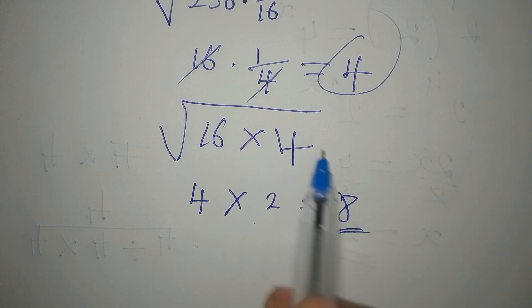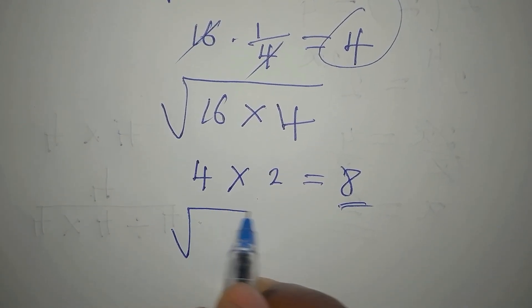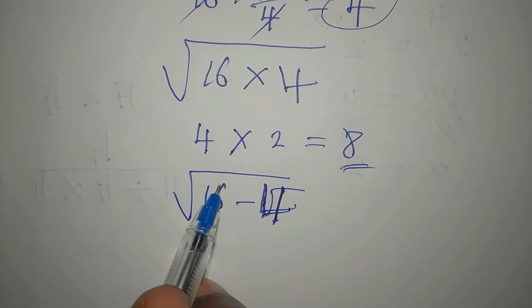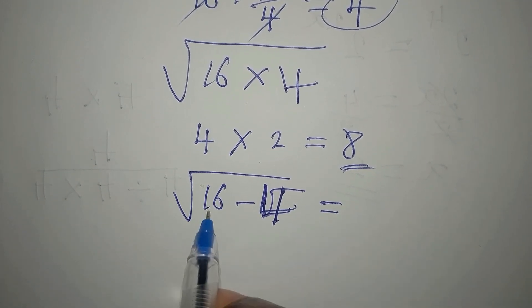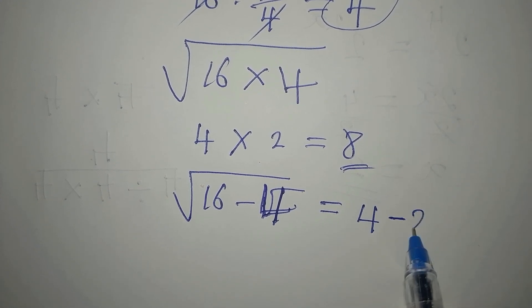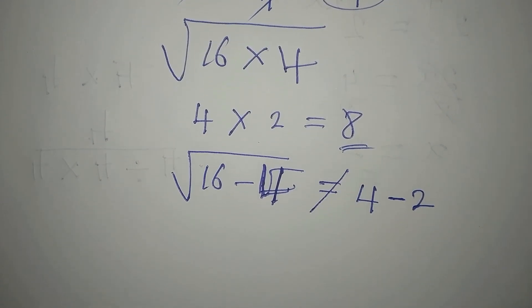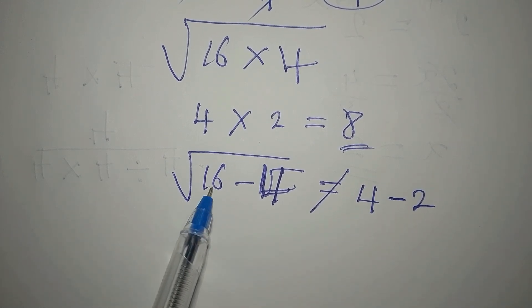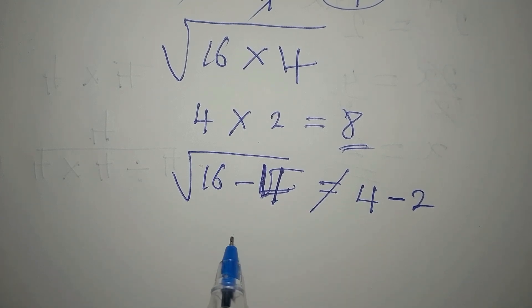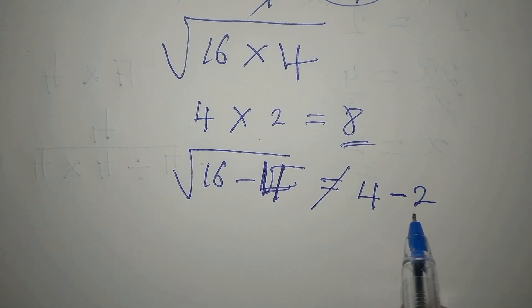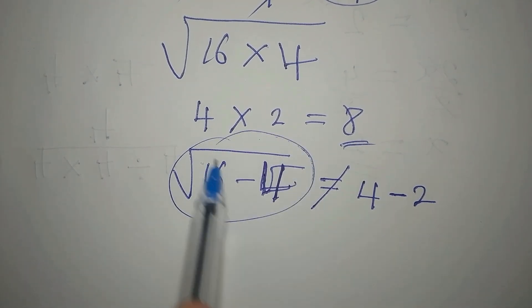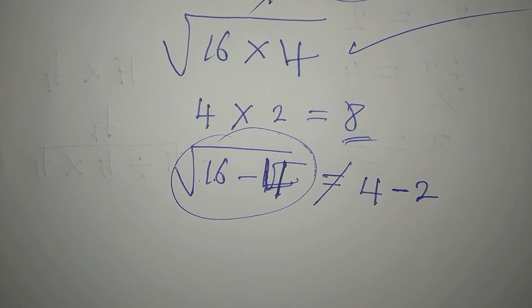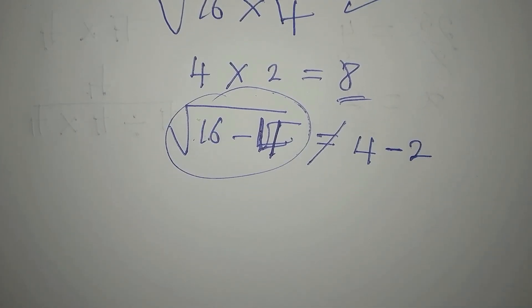However, if the operation is addition or subtraction, you cannot split the square root. For example, square root of 16 minus 4 is NOT equal to square root of 16 minus square root of 4, because square root of 16 minus square root of 4 gives 4 minus 2 equals 2, whereas square root of (16 minus 4) equals square root of 12, which is not 2. So if you want to handle terms separately, it must be multiplication; otherwise simplify inside first before taking the square root. Thank you for watching — if you haven't subscribed, please subscribe to my channel.